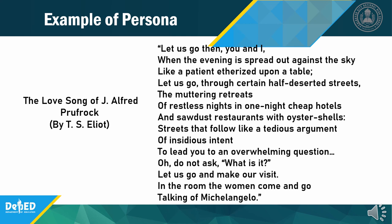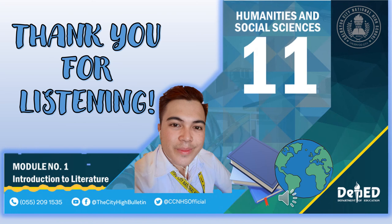Example of persona — "The Love Song of J. Alfred Prufrock" by T.S. Eliot: "Let us go then, you and I, when the evening is spread out against the sky like a patient etherized upon a table. Let us go, through certain half-deserted streets, the muttering retreats of restless nights and one-night cheap hotels and sawdust restaurants with oyster shells — streets that follow like a tedious argument of insidious intent to lead you to an overwhelming question. Oh, do not ask, what is it? Let us go and make our visit. In the room the women come and go, talking of Michelangelo."